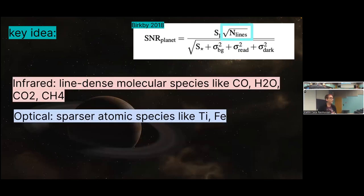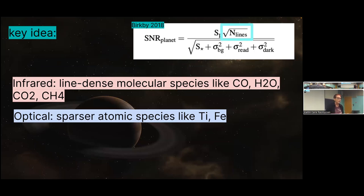In the infrared, you have your line-dense molecular species like carbon monoxide, water, carbon dioxide, and methane — the molecules like to live out in the infrared. In the optical, you have sparser atomic species like titanium and iron. You do have the oxygen A-band, although that's not a particularly dense or wide feature. We'll talk about that.